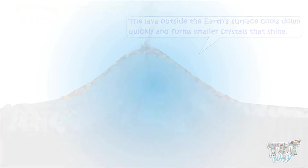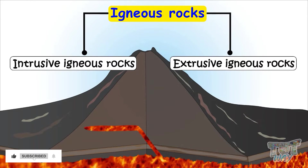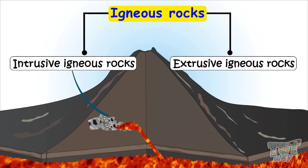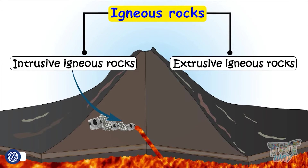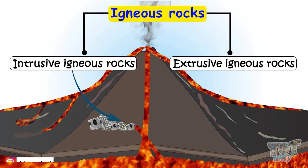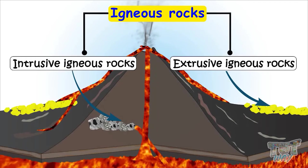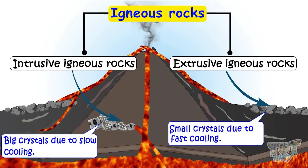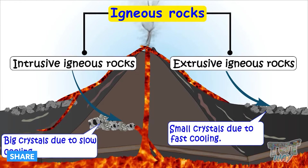So kids, we learned that igneous rocks are of two types: intrusive igneous rocks and extrusive igneous rocks. When the hot molten matter inside the Earth cools down, it forms intrusive igneous rocks with bigger crystals, as the molten matter cools at a slower rate. When lava comes out of the Earth's surface and cools down outside, it forms rocks with shinier and smaller crystals, known as extrusive igneous rocks, because the molten matter cools down very quickly.